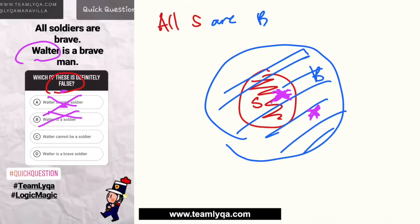Next, we have 'Walter cannot be a soldier.' Yung word na 'cannot' — hindi siya pwedeng maging soldier. Now if you look at the drawing, may possibility siya maging soldier, pwede rin hindi, pero merong possibility. So hindi totoo na hindi siya pwedeng maging soldier — Walter can be a soldier. Ibig sabihin, itong statement na ito ay false. Now when it comes to logic questions, you still have to make sure na yun ang best option. So babasahin pa rin natin yung huli — 'Walter is a brave soldier.' Kung dito ko siya ilalagay, brave na siya, soldier pa, may possibility maging true. So hindi yun pwedeng maging sagot. So ang tamang sagot talaga, definitely, would be letter C.